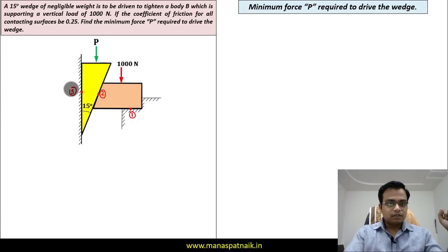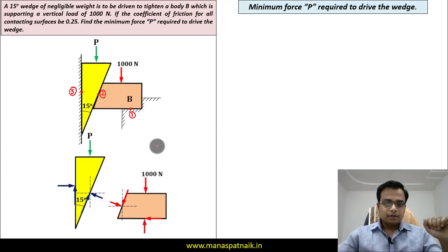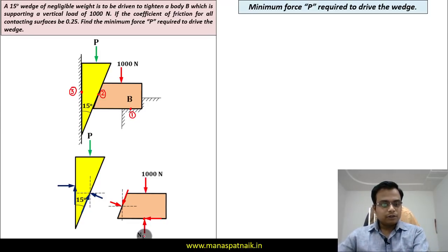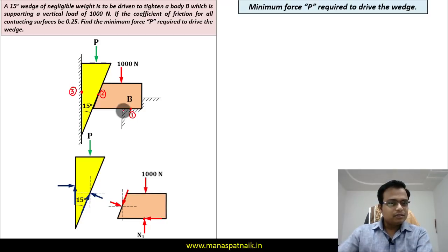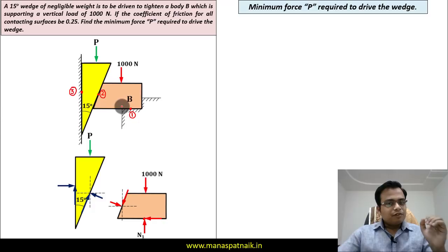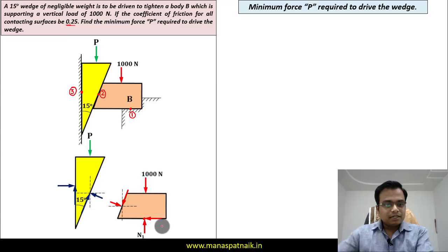Here are the forces. This is point one, so obviously there is going to be a normal — this is N1. If you're trying to drive the wedge in the downward sense, this block will have a tendency to slightly move towards the right, and in that process it will have a friction force slightly towards the left. This is going to be mu times N1, that is mu N1.